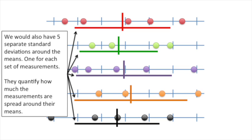We would also have five separate standard deviations around the means, one for each set of measurements. They quantify how much the measurements are spread around their means.